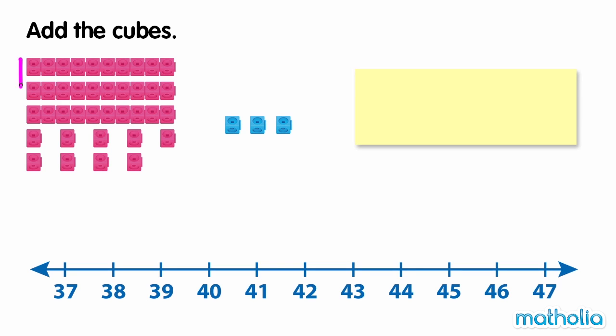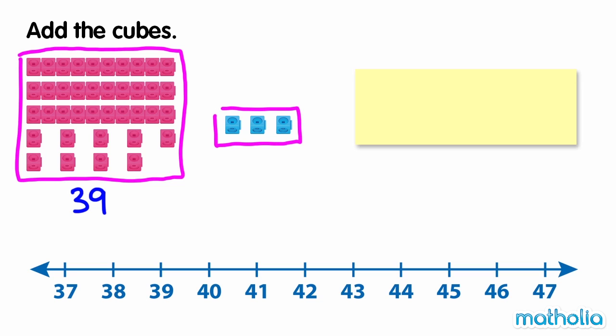Add the cubes. There are 39 pink cubes. There are 3 blue cubes. We need to find 39 plus 3.